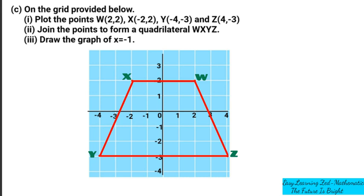So, X is equal to negative 1. We are supposed to draw a graph which has X equal to negative 1. This means that the graph we are going to draw — the coordinate for X will always be negative 1. The value of X in the coordinates will be negative 1.